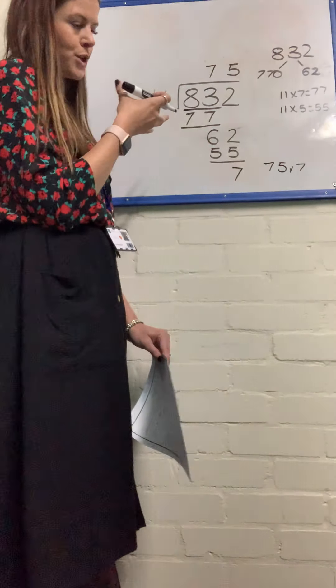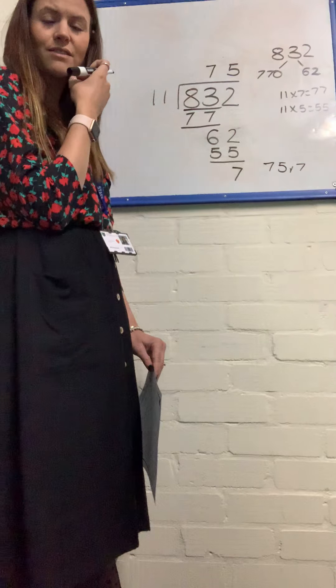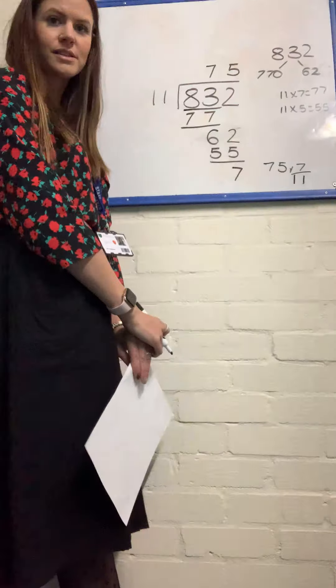But then, using what we learned from before, we want to think, well, how can I leave that as a decimal? Now, straight away, that would become 7 11ths.